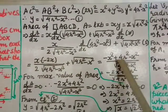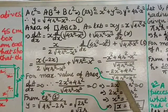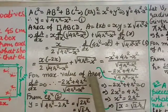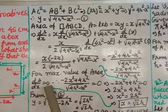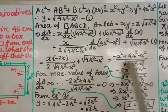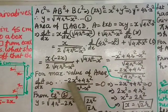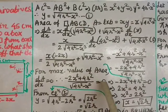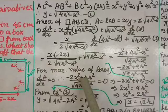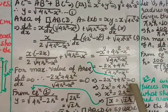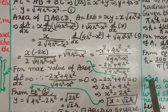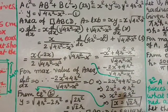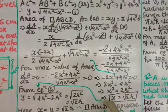For maximum area, set dA/dx = 0. The numerator equals zero: minus 2x squared plus 4r squared = 0. Transferring: 2x squared = 4r squared, so x squared = 2r squared. Taking the square root: x = r times root 2.